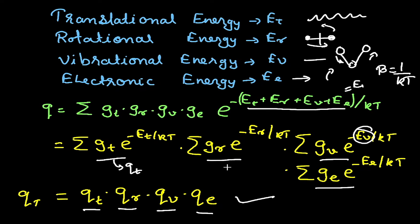In summary, the partition function tells us how energy is distributed amongst different molecules and how many energy levels are accessible. When discussing numerical problems, we will see the total number of energy levels accessible to the particles — that information is obtained from the partition function.